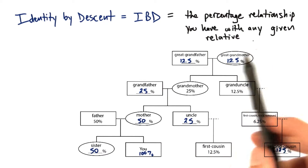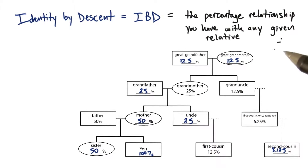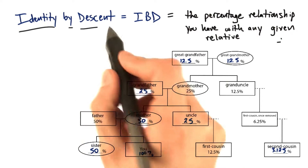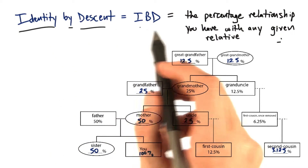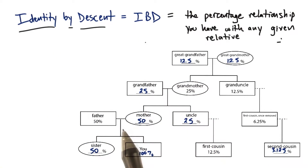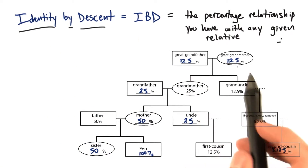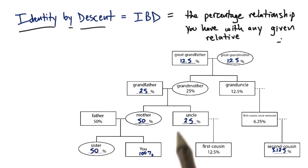The percentage relationship you have with any given relative or family member is what we call identity by descent, or IBD. This is a number assigned to each family member that indicates the percentage of a genome you would share with them based on your common ancestors.